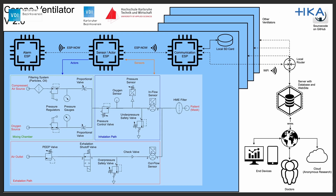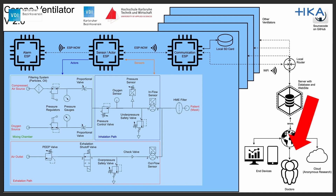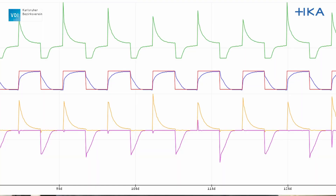A temperature and humidity sensor are also planned. All the sensor data is collected by the sensor actor ESP and is sent to the communication ESP. This controller takes over the communication through the server, where the data is assigned to the patient and stored in the database. When doctors call the website, they can log into their patients and display live ventilation curves or change respiration parameters. They will also be able to get alarm notifications and visualize previous respiration data from the database.